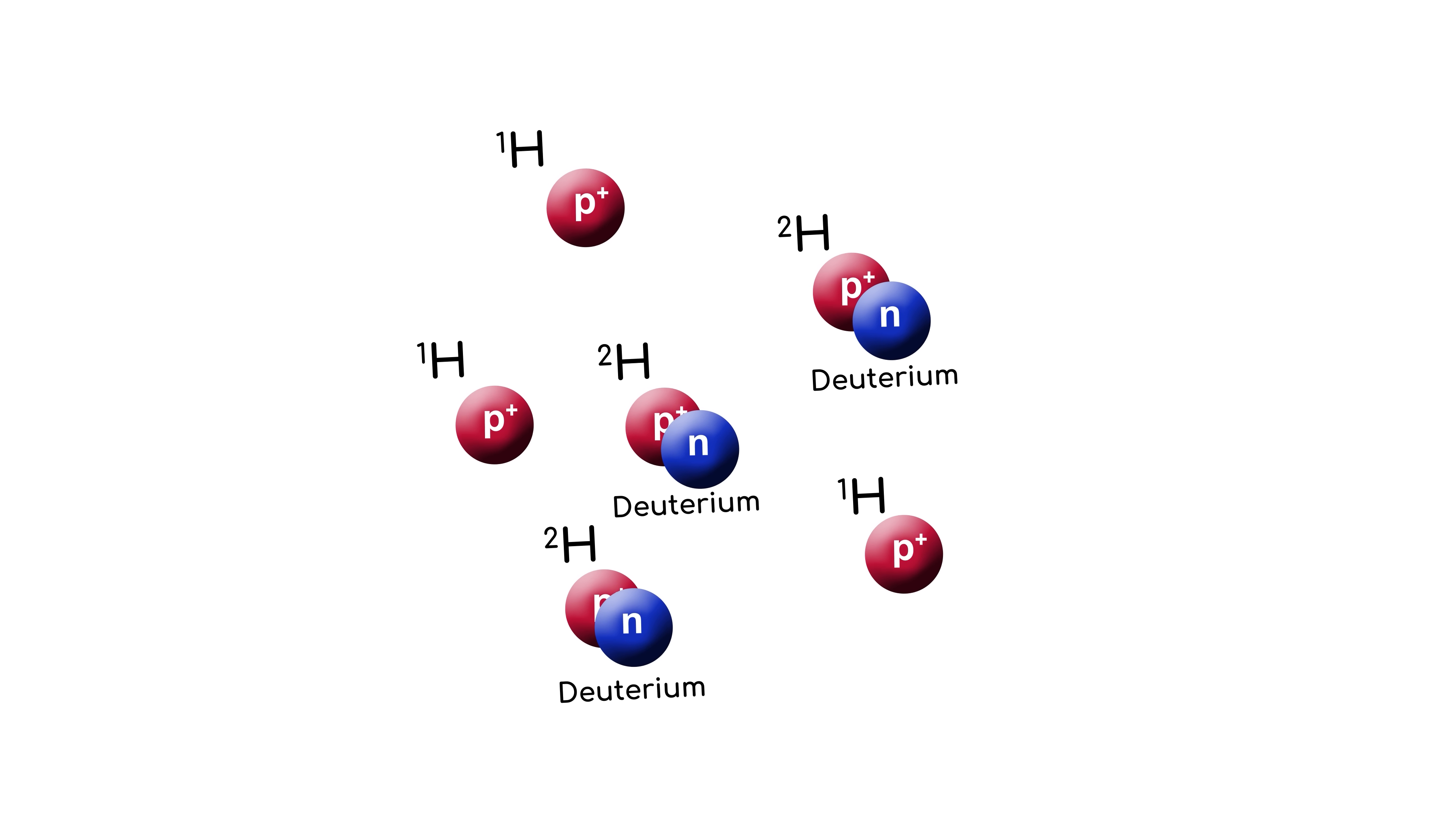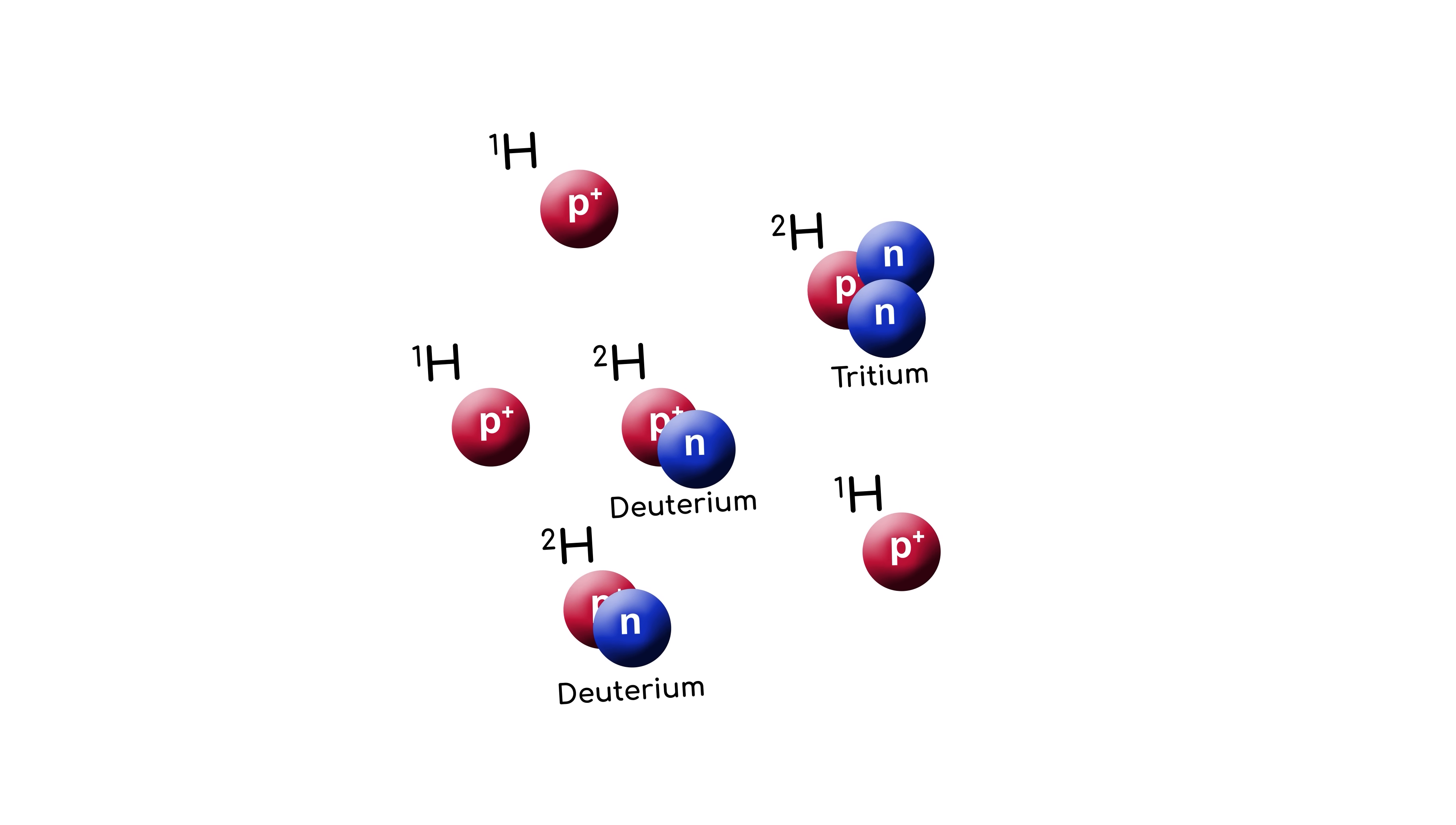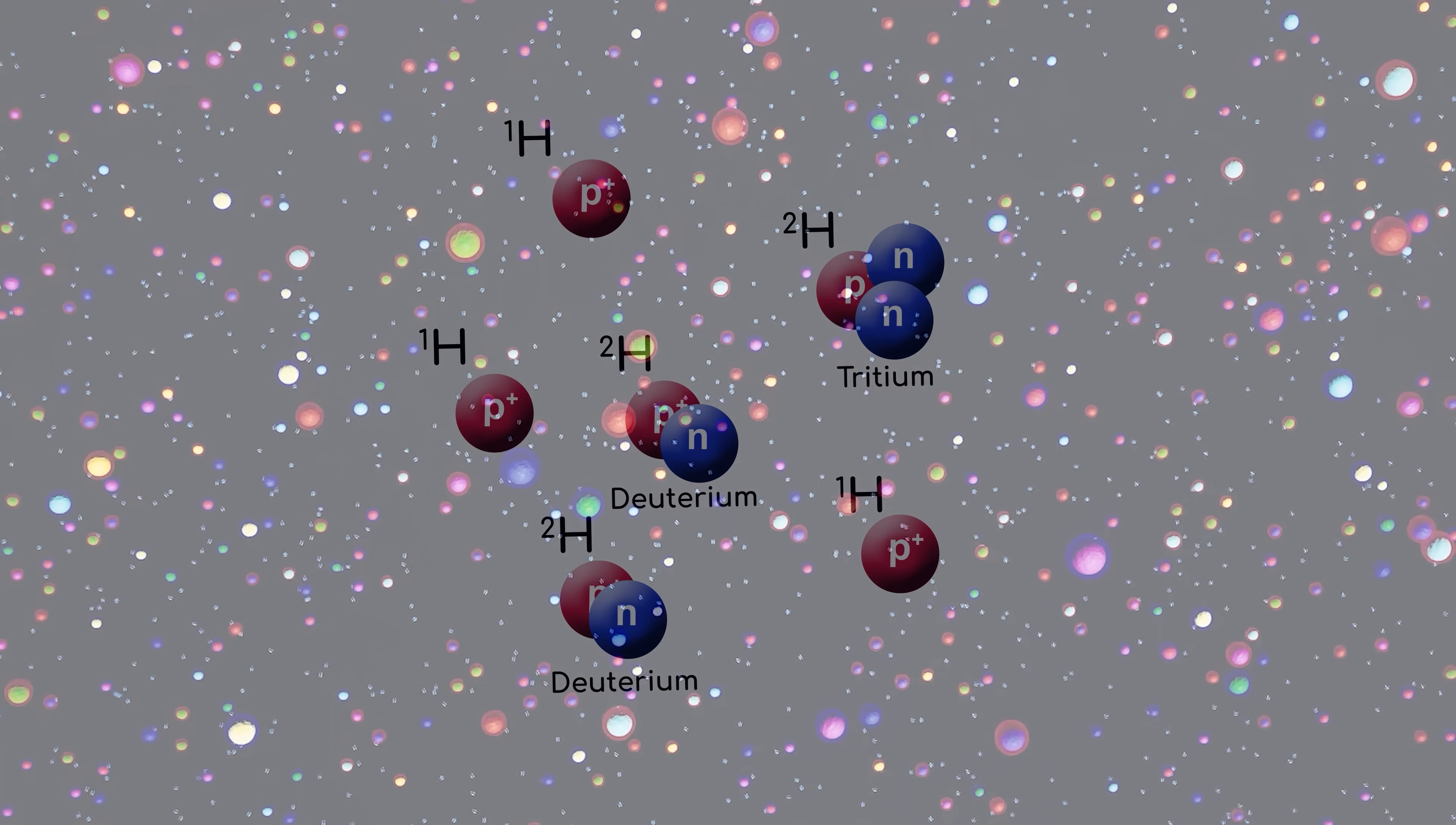Hydrogen and its isotopes, or versions of hydrogen that had the same number of protons, but more or less neutrons, were the most common element in the universe. But hydrogen wasn't the only one.